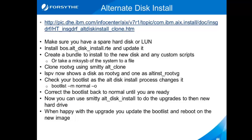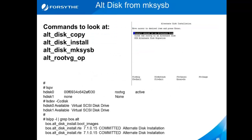I've got some slides coming up that will actually show you some of the steps. The four commands that you're going to find really useful are: altdiskcopy, altdiskinstall, altdiskmakesysb, and altrootvgop. Looking over to the right, I grabbed a copy of what the SMIT screen looks like. Here I have the option to clone rootvg to an alternate disk, to take a makesysb and install it on an alternate disk, or to do a NIM alternate disk migration, which is the ADM.